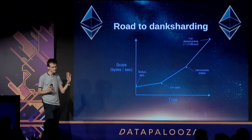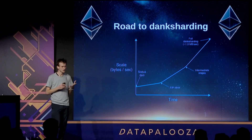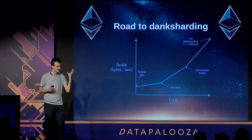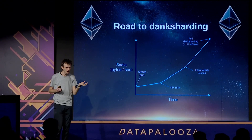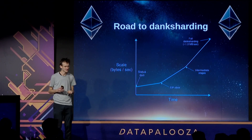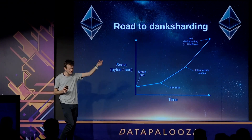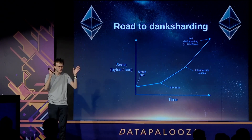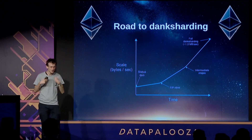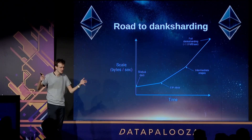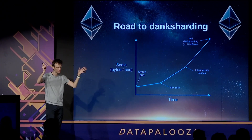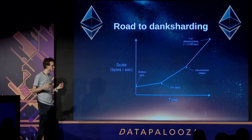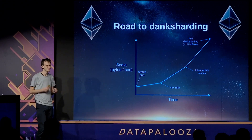That is what full danksharding is: a system where we add a new type of transaction where you can put in a root of a blob, that blob is a bunch of data uploaded through a separate peer-to-peer network, and nodes verifying Ethereum blocks verify availability of the entire set of blobs by doing this two-dimensional random sampling procedure — thereby verifying that enough of the data is there to recover the whole thing.